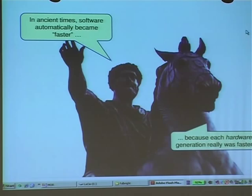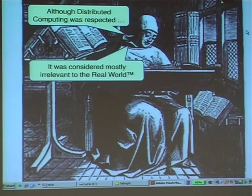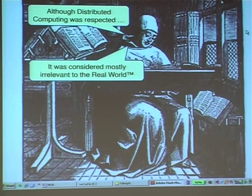And so as a result, distributed computing was always about the future. People would say, it's the branch of computer science of the future, and it will possibly always be of the future. And this was the state of affairs for a long time.